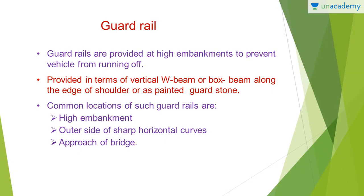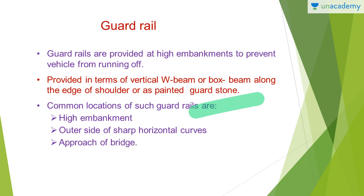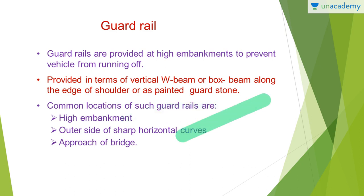Next are the guardrails. Guardrails are provided at high embankments to prevent vehicles from running off. They are provided as vertical W beam or box beam along the edge of the shoulder, or as painted guard stone. Common locations for guardrails include high embankments, the outer side of sharp horizontal curves, and on the approach of bridges.